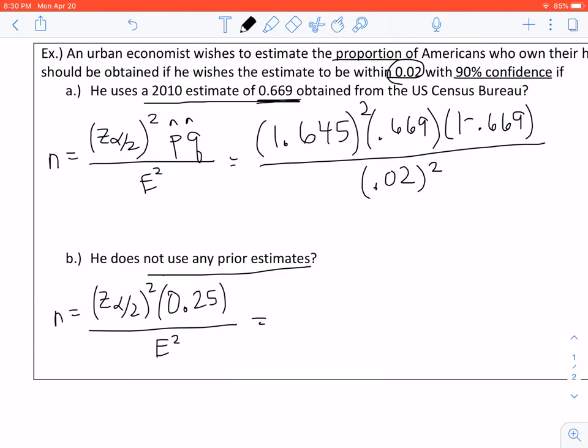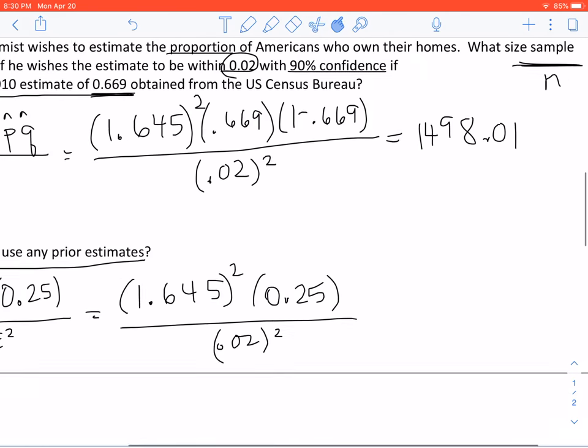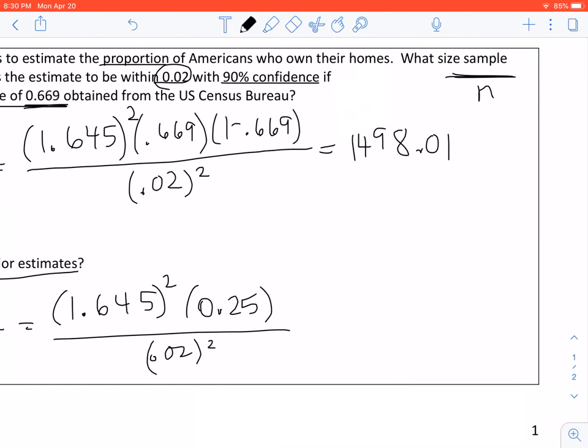Likewise, for part B, it's the same Z alpha over 2 value. So we get 1.645 squared times 0.25 divided by 0.02 squared. Working out A, we get 1,498.01. And with these, you always need to round up. So we will round up to 1,499 subjects or people.